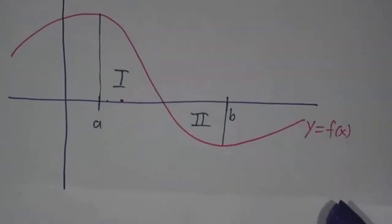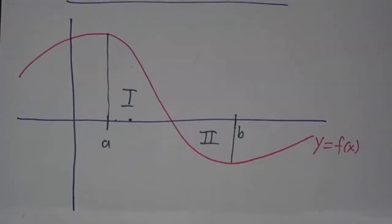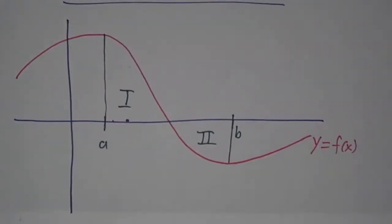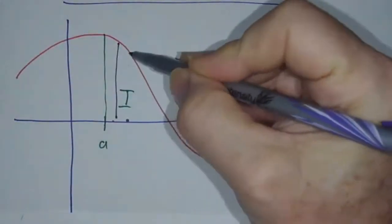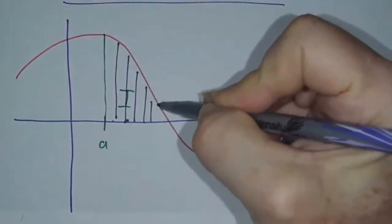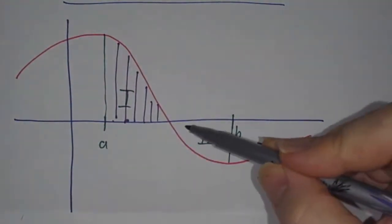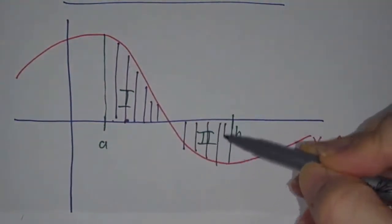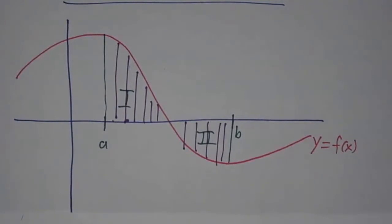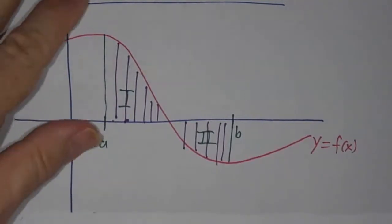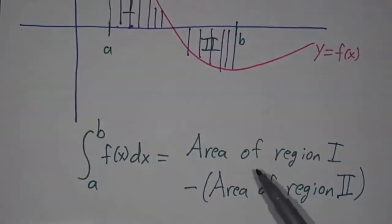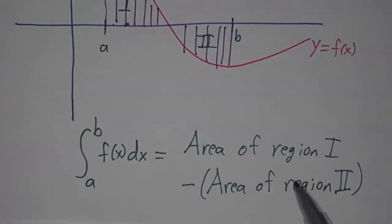And if you have something that is positive some places and negative some places, well then, the contributions from these slices are going to give you the area of region 1. And the contributions for these slices are going to give you minus the area of region 2. So the integral is going to give you the area under the curve minus the area over the curve.